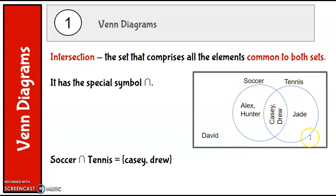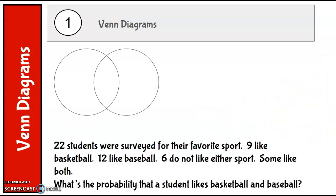Now we can use Venn diagrams to help us figure out probabilities. 22 students were surveyed for their favorite sport. 9 like basketball, 12 like baseball, 6 don't like either sport, and some like both. What's the probability that a student likes basketball and baseball? Well, it doesn't straight out tell us that information. It just says some like both, but we can actually figure it out.